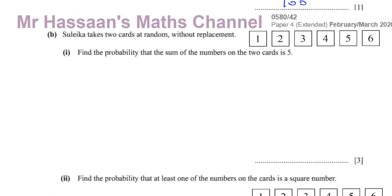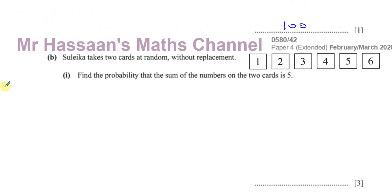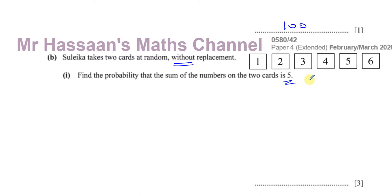Then it says Suleika takes two cards at random without replacement. Find the probability that the sum of the numbers on the two cards is five. Without replacement is a key phrase here — she takes a card and won't put it back, so that number won't be available for the second pick. This affects the number of outcomes; there are fewer cards to choose from.